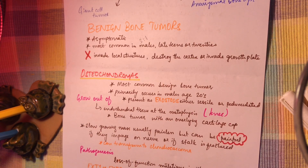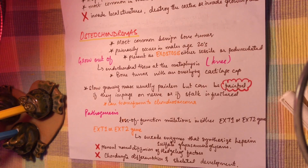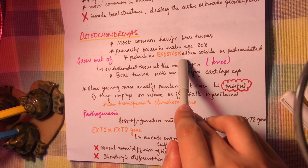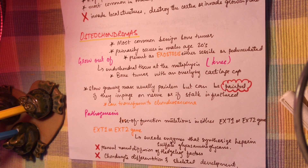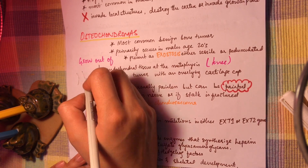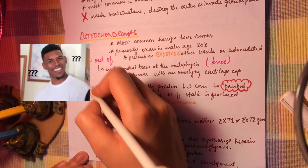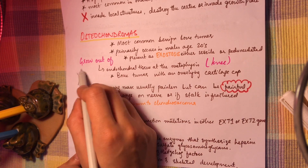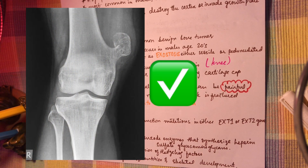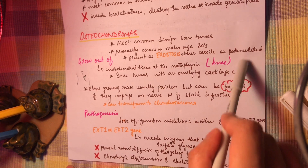The first benign bone tumor is the osteochondroma, which is actually the most common benign bone tumor. It primarily occurs in males in their 20s. They present as exostoses and are either sessile (without a stalk) or pedunculated (with a stalk). Osteochondromas grow out of the endochondral tissue at the metaphyses and can be visualized on X-ray.